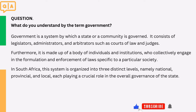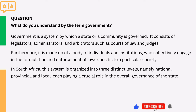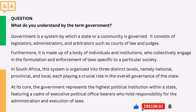In South Africa, this system is organized into three distinct levels, namely national, provincial, and local, each playing a crucial role in the overall governance of the state. At its core, the government represents the highest political institution within a state, featuring a cadre of executive political office-bearers who hold responsibility for the administration and execution of laws.